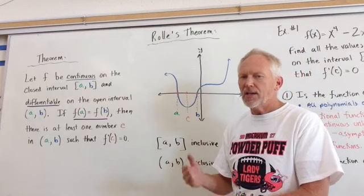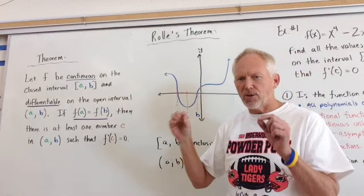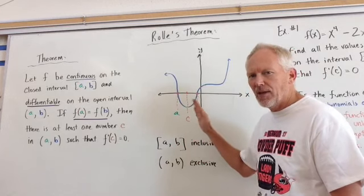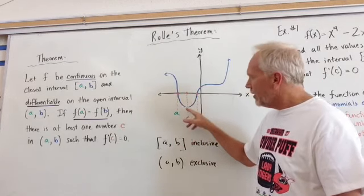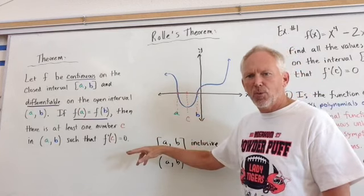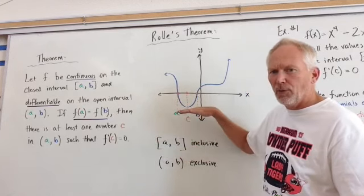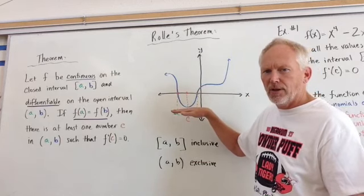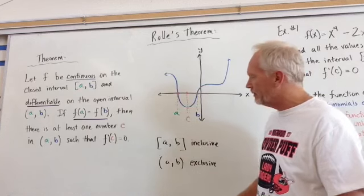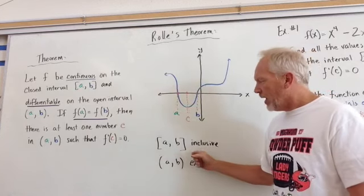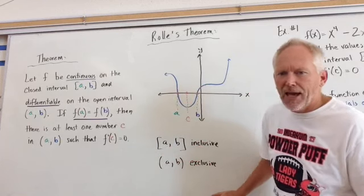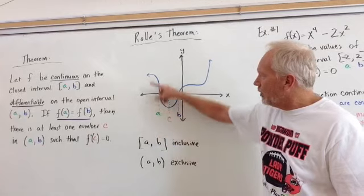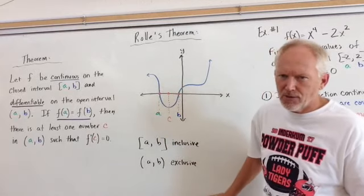And what the theorem states is if there are two Y values that are the same, then there must be some C value in there, somewhere in between, that yields us a derivative of zero. Now, derivative of zero, if you recall, is just a flat line. It's horizontal. The slope is horizontal or zero. So remember, A to B in brackets is inclusive. A to B in parentheses is exclusive. All right. So now it looks like this function meets the demands. So that's cool.